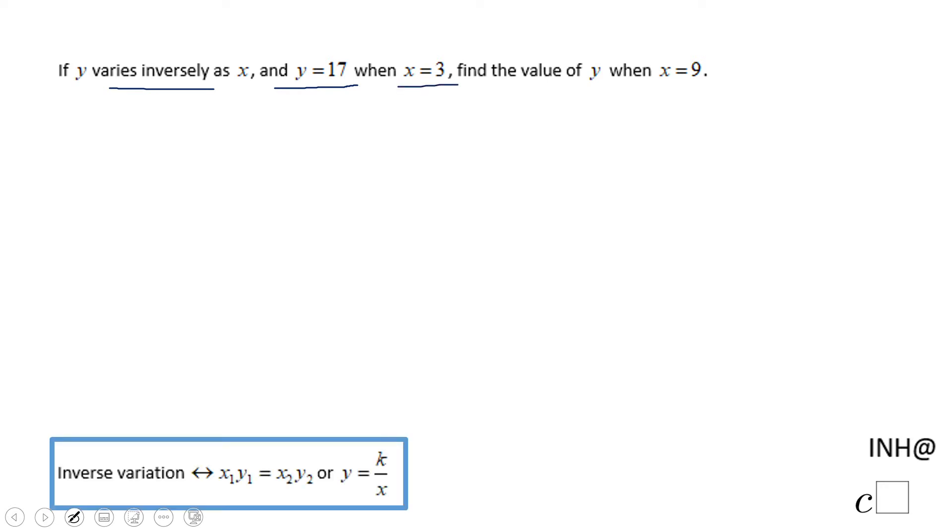There are two ways to do this problem and you see them both here. I'm going to start with this method first, which says x1 times y1 equals x2 times y2. In this formula, we're going to replace the x's and y's. So y equals 17 will be y1, and x1 will be 3.